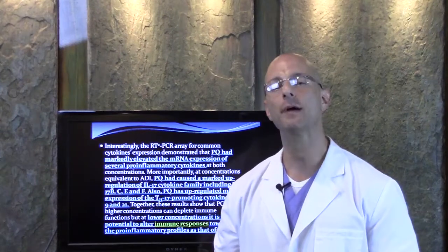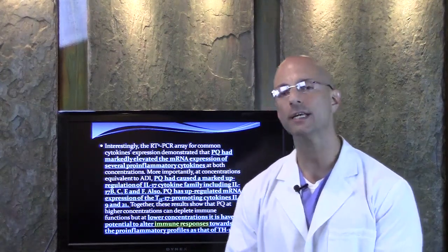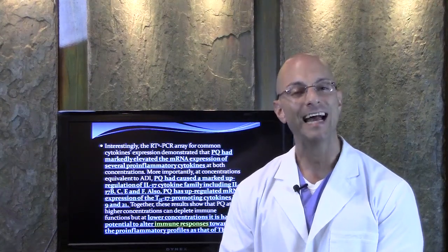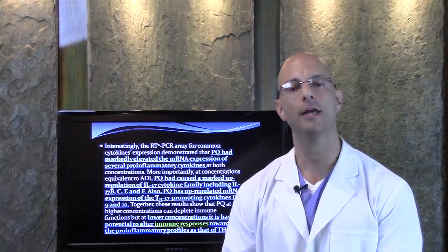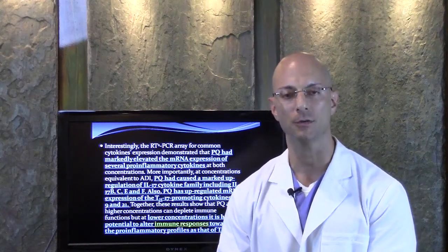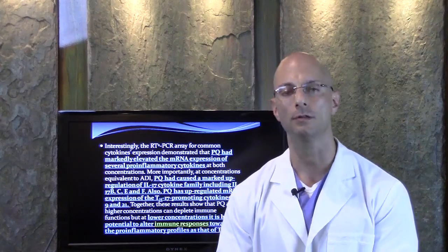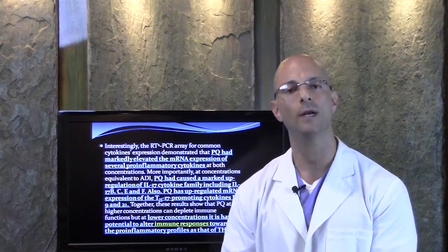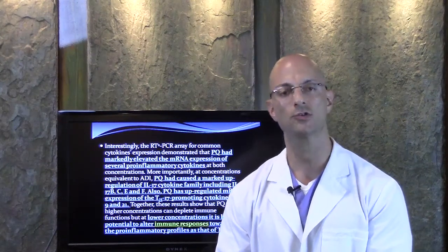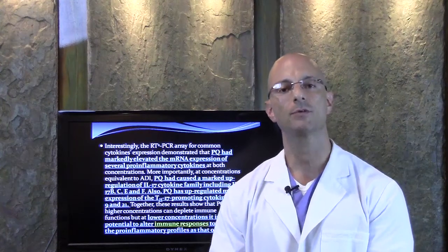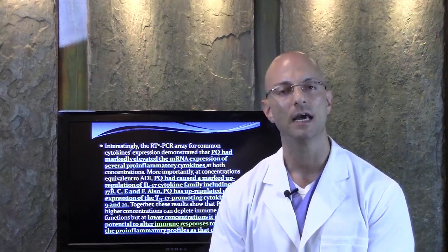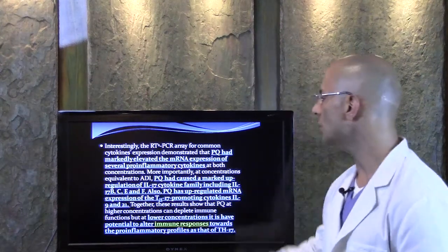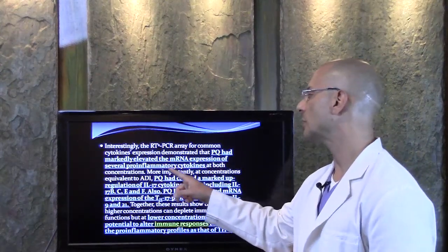It elevated pro-inflammatory cytokines. What does that mean to us? Well, when you have an inflammatory condition attacking your thyroid, your nerves, your stomach, your brain, your bones, your intestines, or your liver, that inflammatory condition is caused by overexpression of pro-inflammatory chemicals in your body that are produced by your immune system. These chemicals are called cytokines. Your immune system, when it gets stressed by various toxins or stressors in your environment, produces these toxic chemicals called pro-inflammatory cytokines, which produce more inflammation. So this herbicide produced markedly elevated pro-inflammatory chemicals.